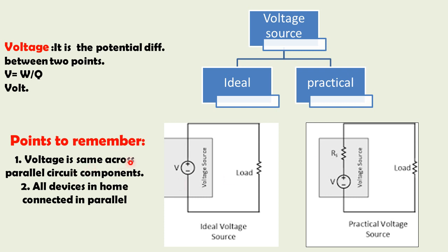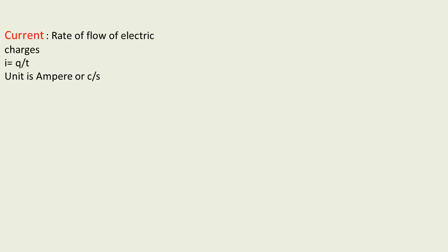An important point: voltage remains the same across all components connected in parallel. Whatever components are connected in parallel in a circuit, their voltage will remain the same. Due to this, all devices in our homes are always connected in parallel, because we want equal voltage across all components.